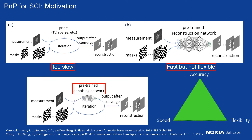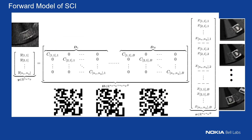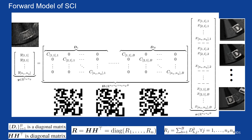PnP simply uses a pre-trained denoising network plugged into ADMM or GAP, and we can get good results in a short time. Writing down the forward model of SCI: the right side vectorizes the B different frames, and the left side is the measurement. The sensing matrix is a concatenation of B diagonal matrices, which makes the algorithm development very efficient and fast.